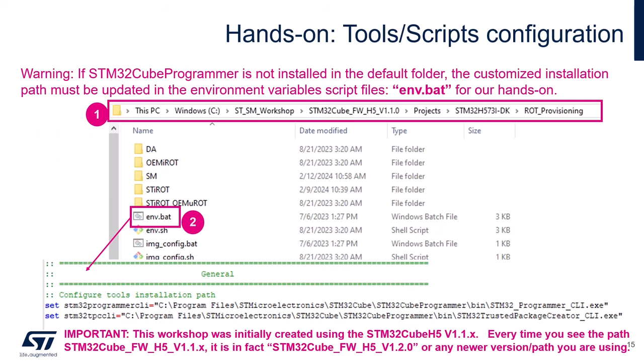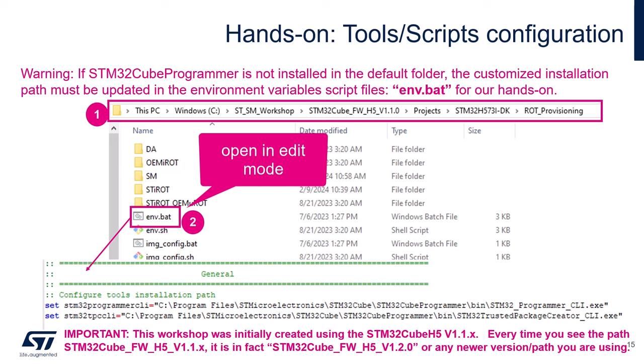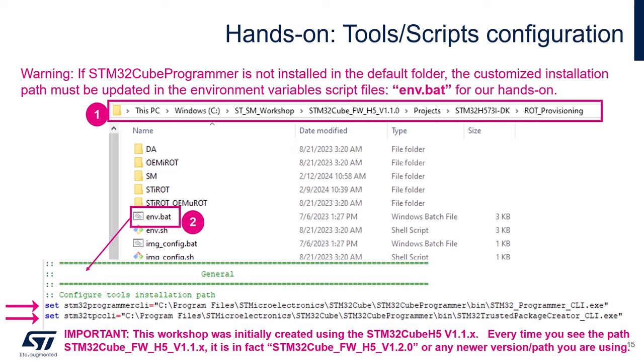This step must be executed only if you did not install the STM32CubeProgrammer tool in the default folder. If that is the case, locate the file env.bat under the workshop folder at cube-firmware-h5 / projects / STM32H573-DK / rot-provisioning. Open this file in edit mode and make sure the tools installation paths for STM32ProgrammerCLI and STM32TPCCLI are updated with your custom installation path.